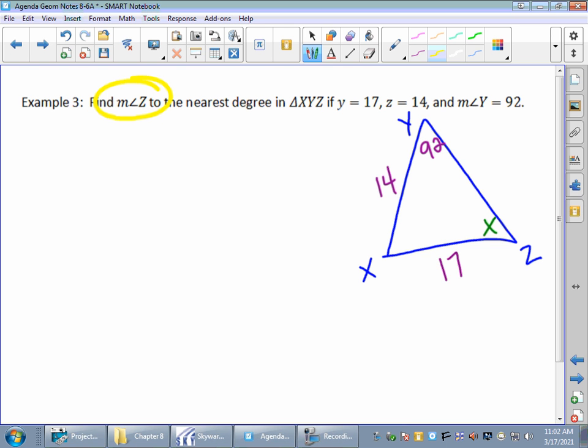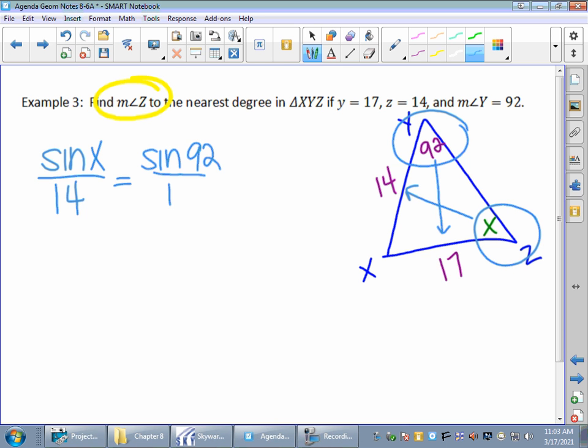We don't know if it's a right triangle. We still have three pieces of information, and we're still going to set up that proportion. The sine of an angle over its opposite side. So I could do the sine of X over 14. Looks a little bit different than those last two problems we just did, but we know how to do this. We just got to put it all together. The sine of 92 over 17.